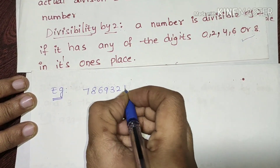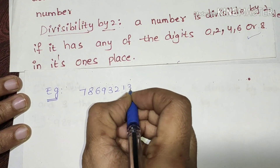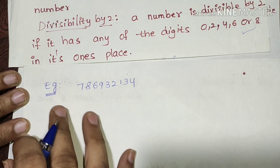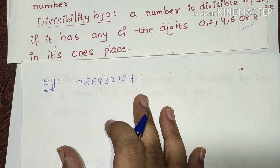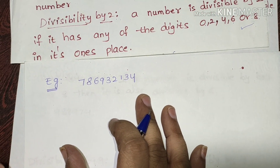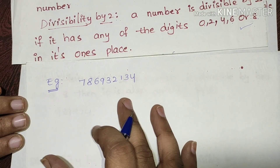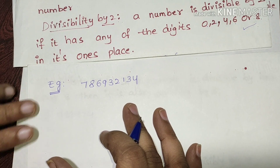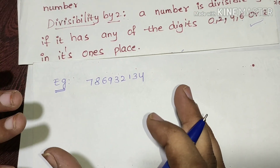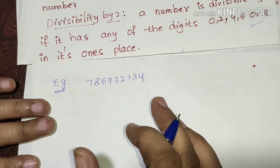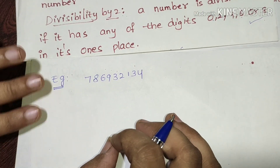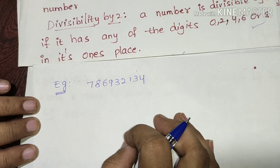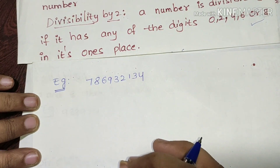Let us check an example problem. Suppose we have a big number. Performing normal division on a big number is a lengthy process. So, using divisibility rules, it will be easy to check divisibility by 2.